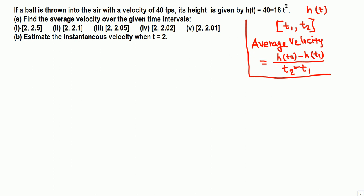We want to use this formula over and over. The first time interval is T1 to T2. Basically, T1 is 2 and T2 is 2.5. So for number one, the average velocity will be height at 2.5 minus height at 2, divided by 2.5 minus 2. This is the average velocity over the time interval 2 to 2.5.